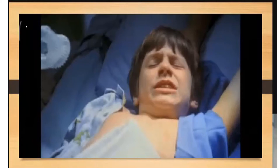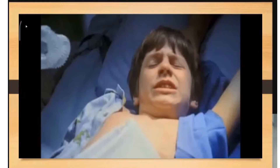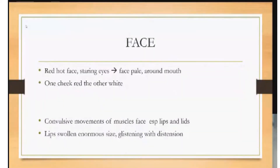Here we can see that there is paleness around the mouth whereas there is redness around the cheeks, and the size of the lips is larger than previously seen. From this we can remember the face of the child: red hot face, staring eyes. Since the child is autistic the face is pale around the mouth, one cheek red the other white, which is also seen in Cina. There are convulsive movements of the muscles of the face, especially the lips and lids.